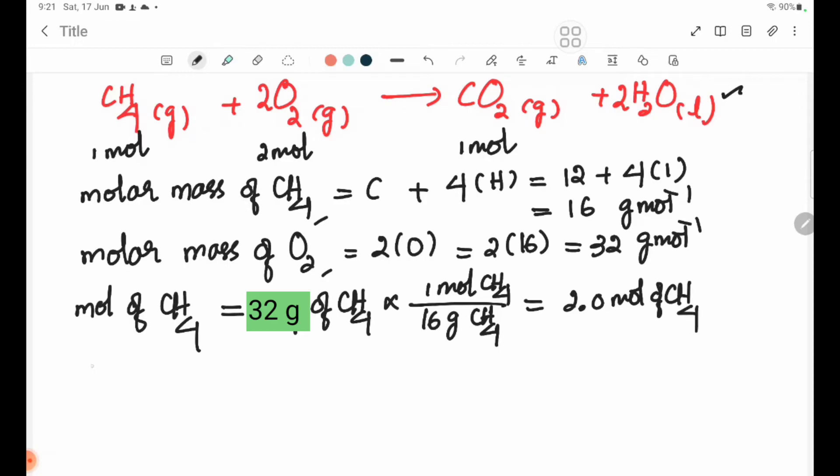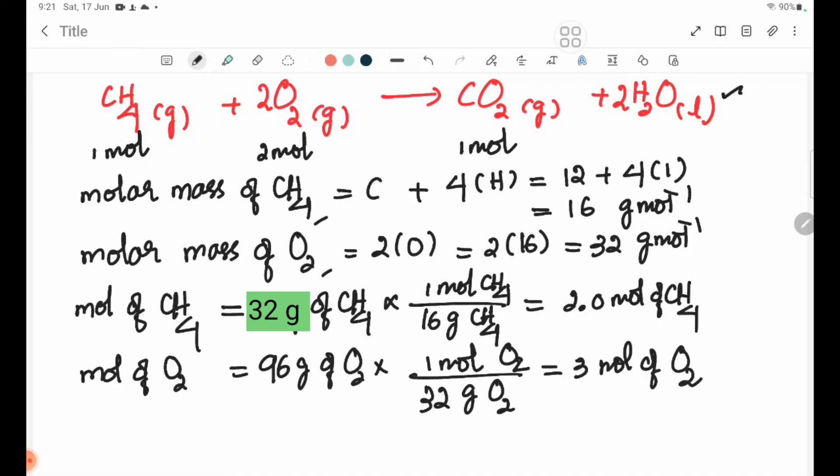The mol of O2 equals 96g of O2 times 1 mol O2 over 32g O2, equals 3 mol of O2.